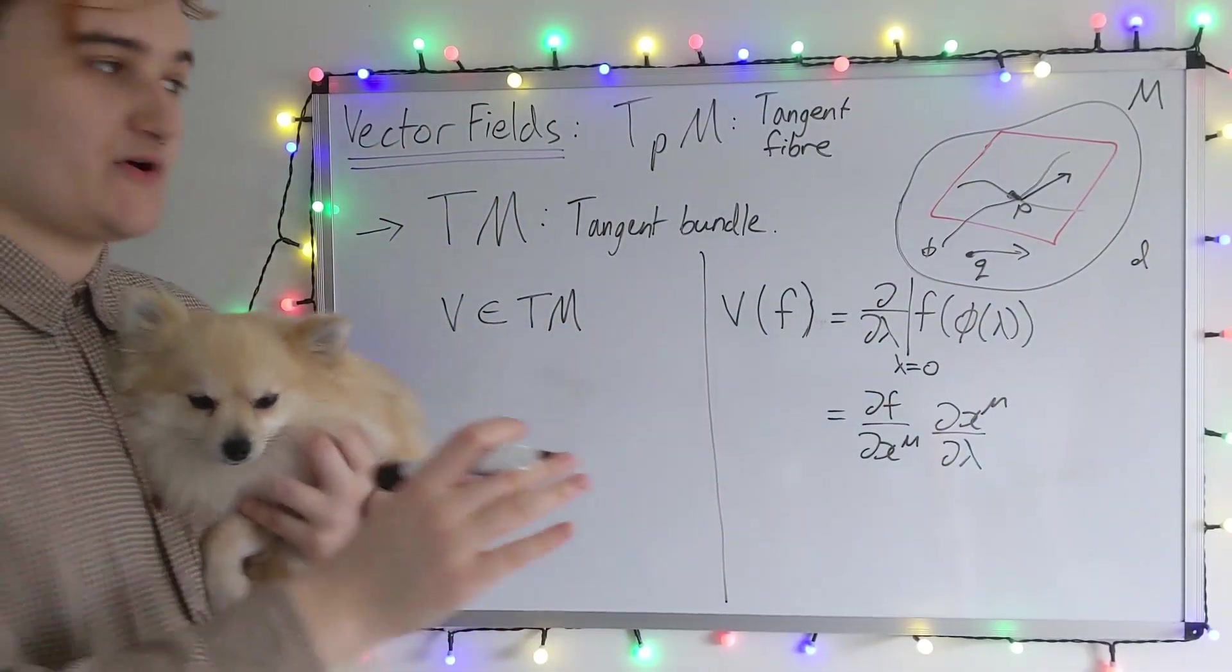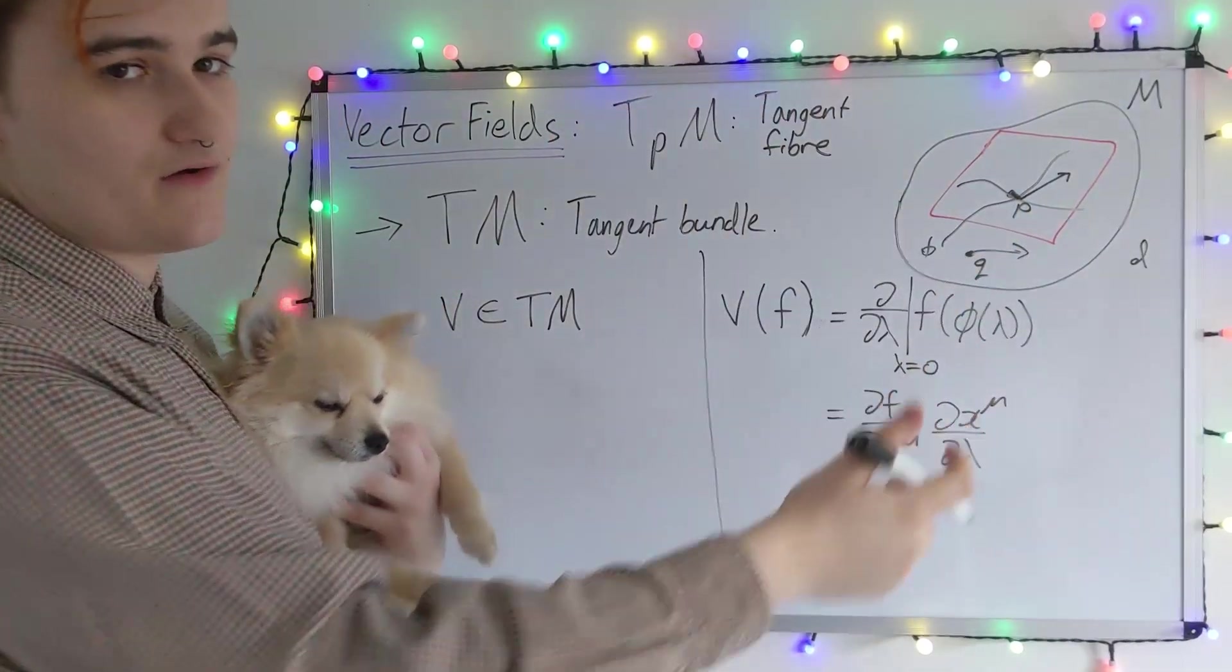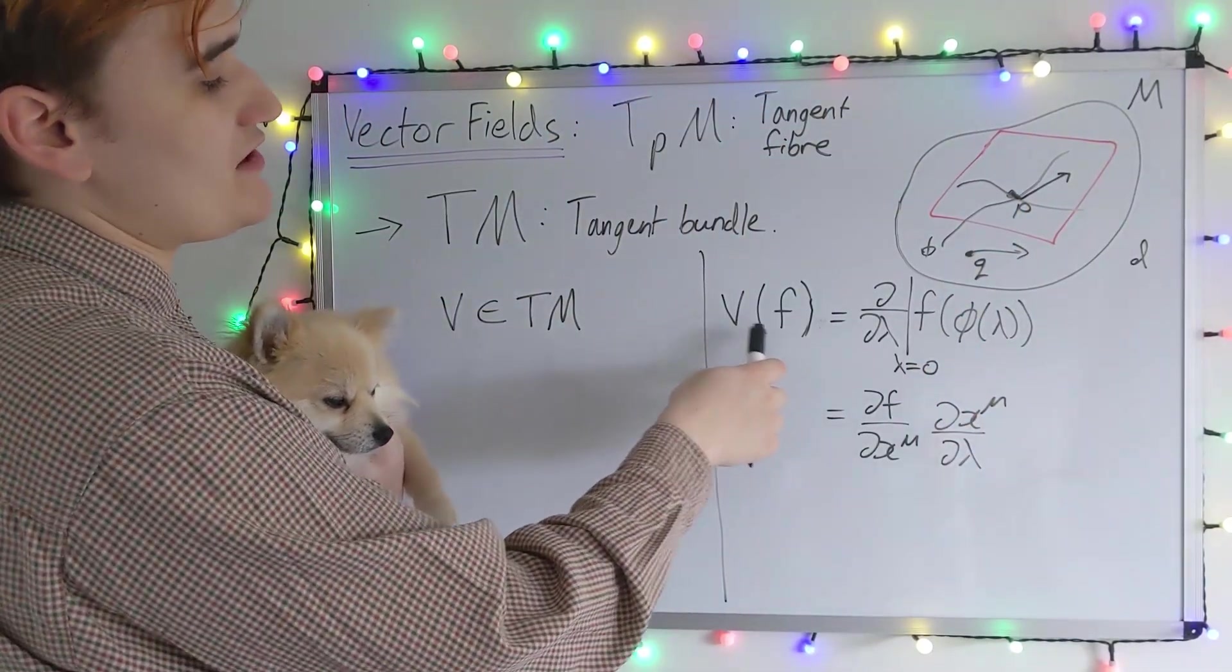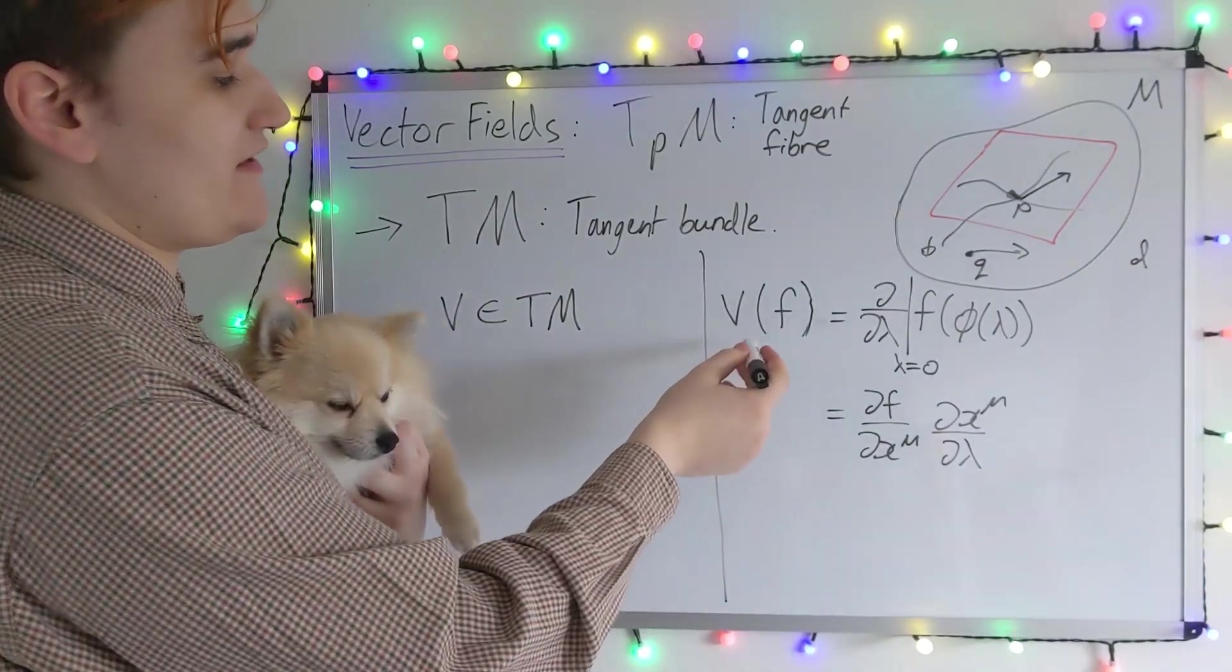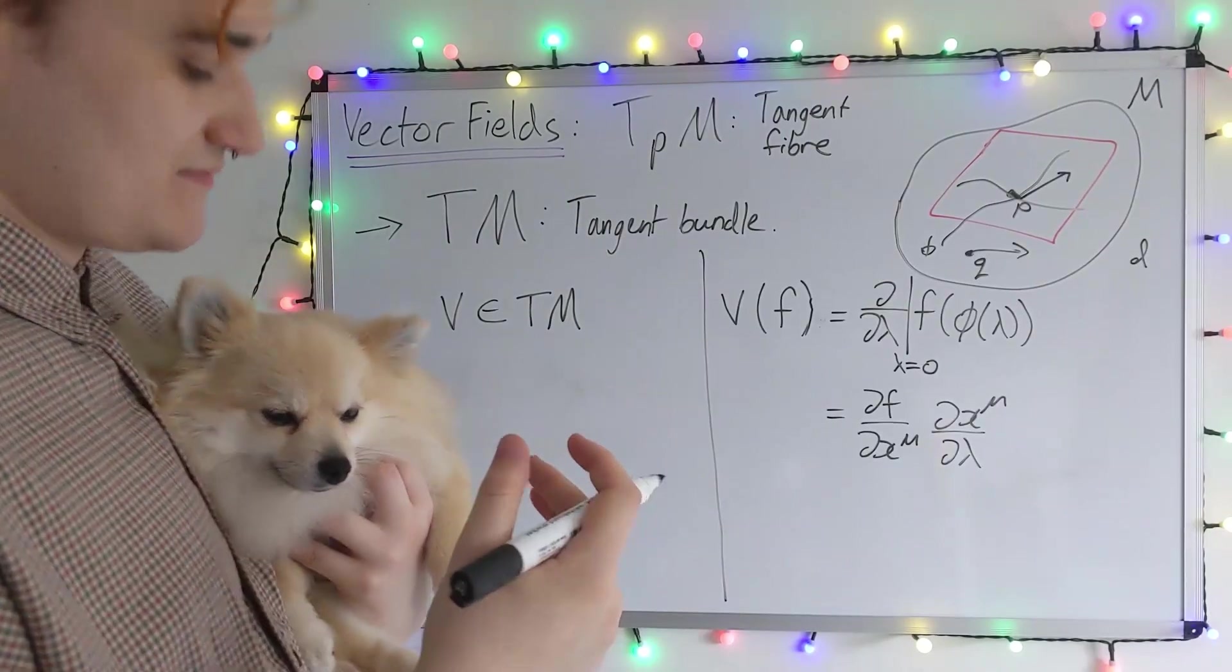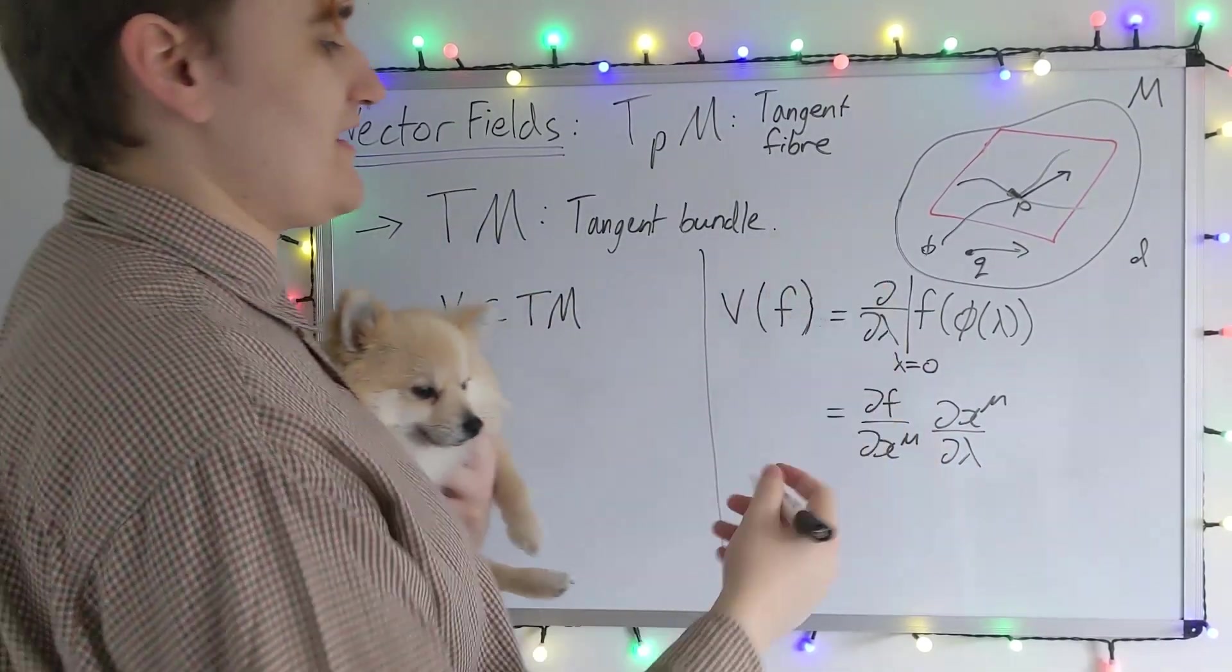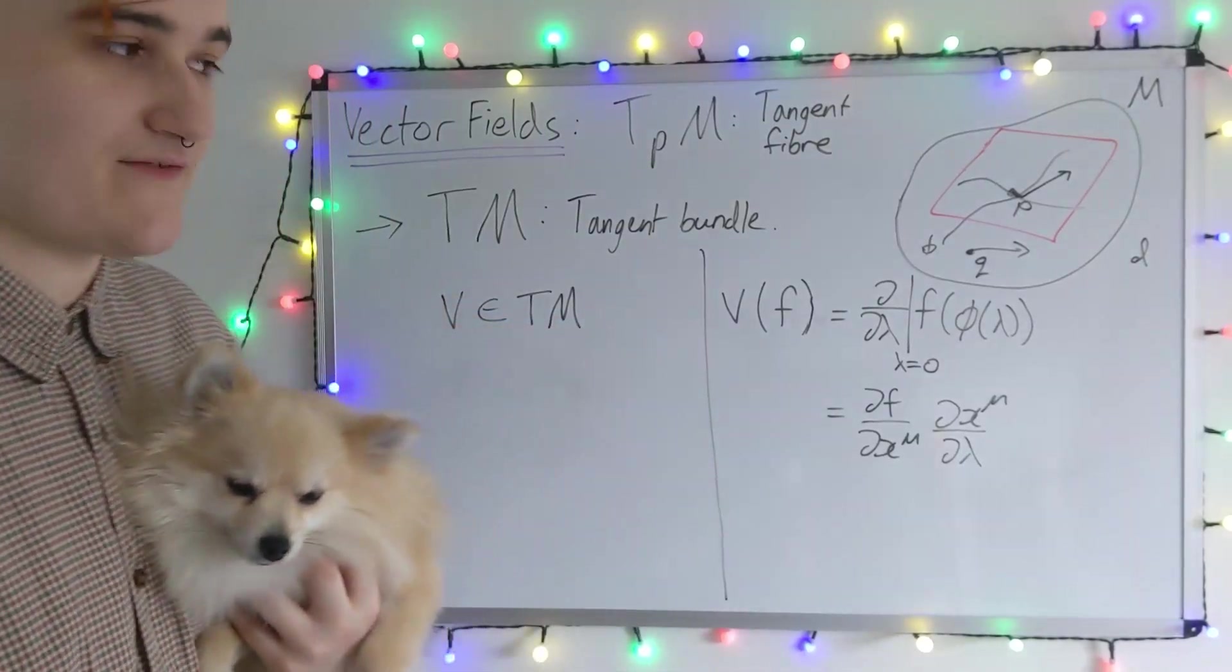Rather than just talking about a single point, we could instead consider the whole manifold, and we could evaluate the vector on the entire function. This is going to produce a whole set of vectors, which are going to be what we would think of as the vector field.